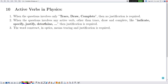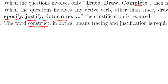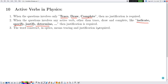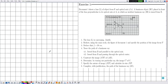In Section 10, we recall active verbs in physics. Whenever the question involves only 'trace,' 'draw,' or 'complete,' no justification is required. When the question involves any other active verb — such as 'indicate,' 'specify,' 'justify,' or 'determine' — justification is required. Moreover in optics, the word 'construct' means we need to trace and justify.